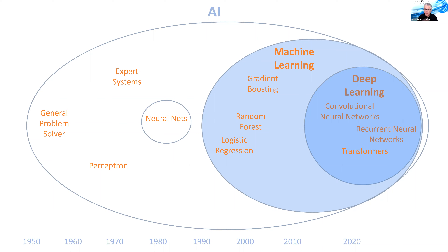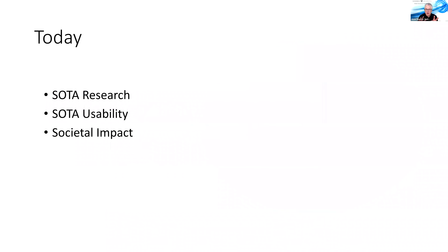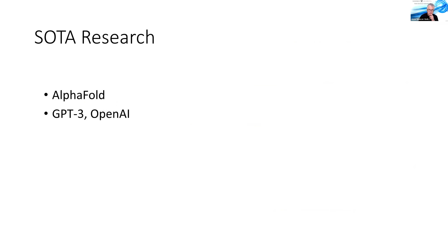Now we have the overview of machine learning and deep learning. What's been happening? Most of what's been happening has been in deep learning — there are thousands, tens of thousands of articles published each year in deep learning. It's an area of intense work and development. Today we'll talk about just a few items of state-of-the-art research, some of which is quite surprising. Then state-of-the-art usability, and then we'll end with social impact and next steps.